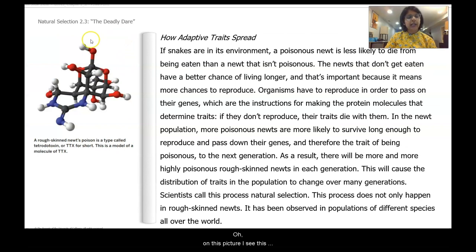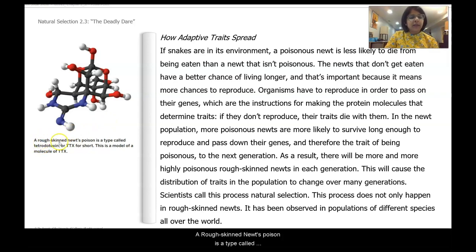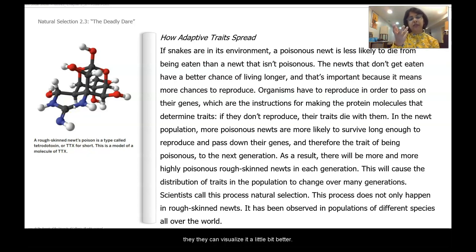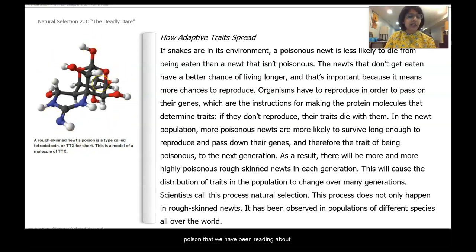On this page I see a picture, so I'm going to read the caption to figure out what it is. A rough-skinned newt's poison is a type called tetrodotoxin, or TTX for short. This is a model of a molecule of TTX. That helps me understand that TTX is a molecule — very small — and scientists tend to make models of things they cannot see so they can visualize them better.